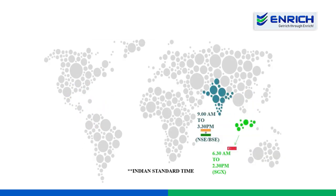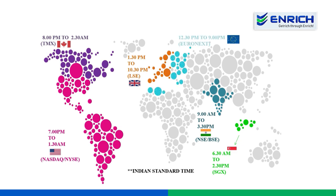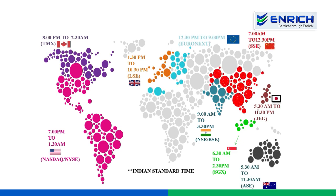The first thing to know in stock market is world market timing and index. Why do we need to know world market timing? Let me explain with an example. Imagine a trader sells his stocks as soon as the market opens because the market is negative, but he does not check the trend in the world market.